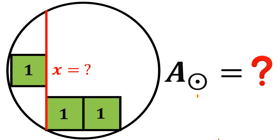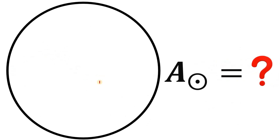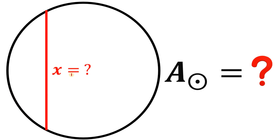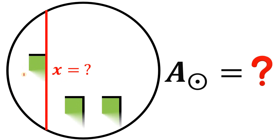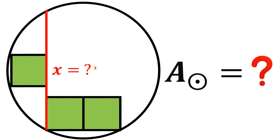Here's a fun geometry challenge. Given this circle, let's draw a red segment and call it x. That's the first question — we want to find the length of segment x. Now let's draw three congruent squares each with an area of one square unit. The next question is to find the area of this circle given this condition.